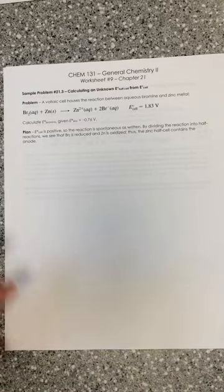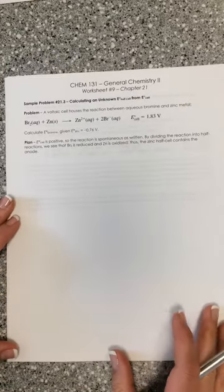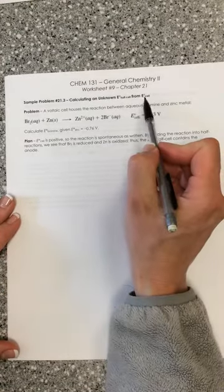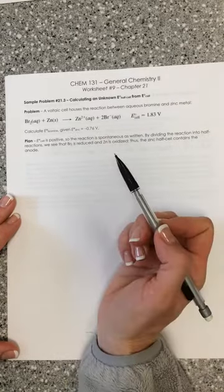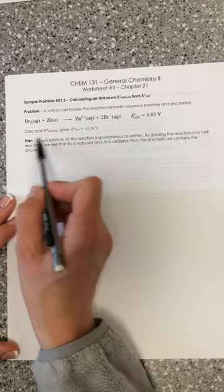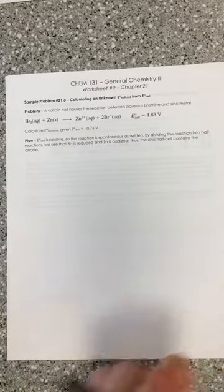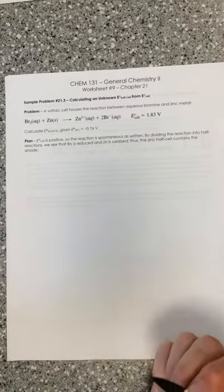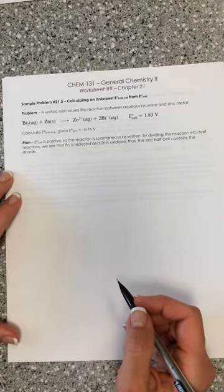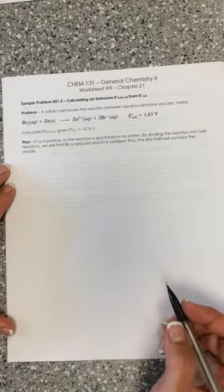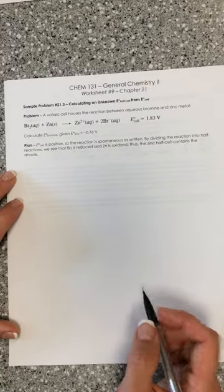What we do in sample problem 21.3 is say, well what if E cell was known and one of the half reaction potentials was known? We can use that to figure out the half cell potential of an unknown. So really it's just a different variable that we have here, but we're going to treat this problem the same way that we treat all of our problems for calculating E cells for spontaneous voltaic cells.